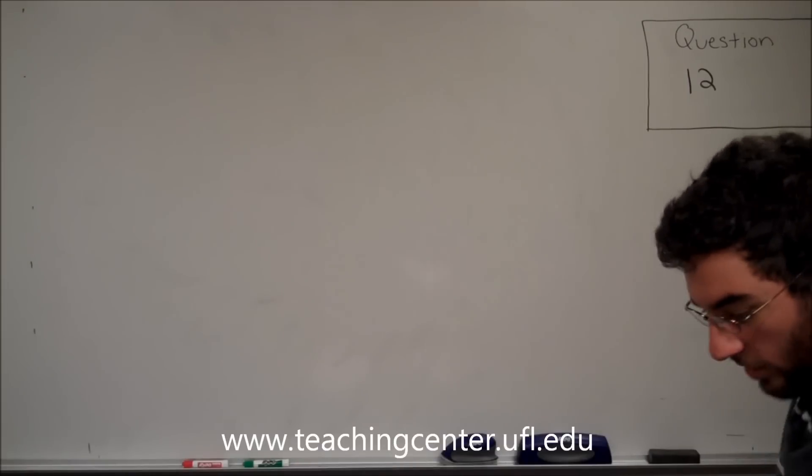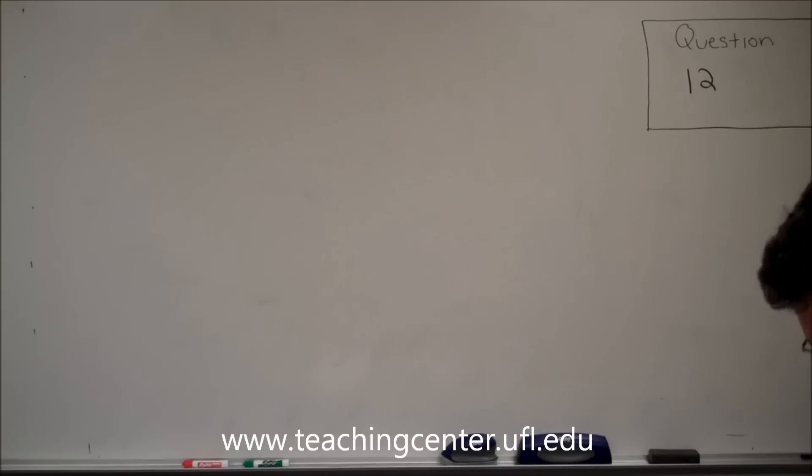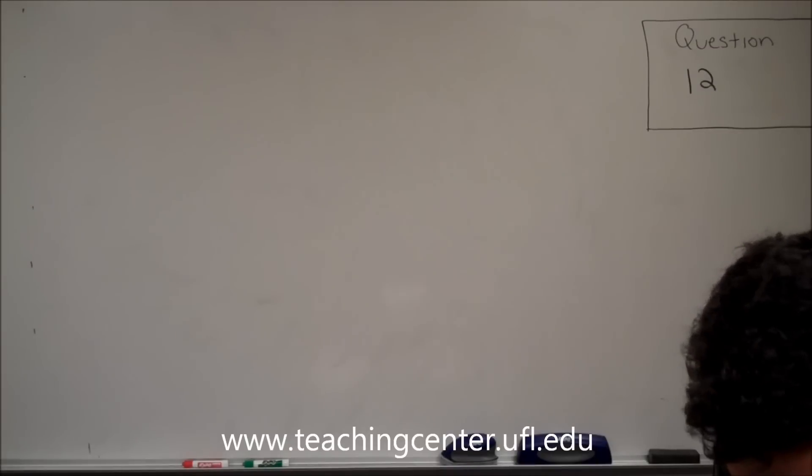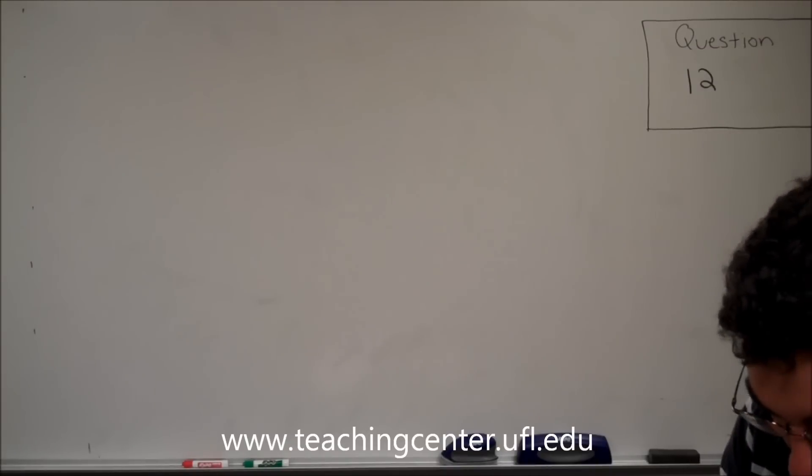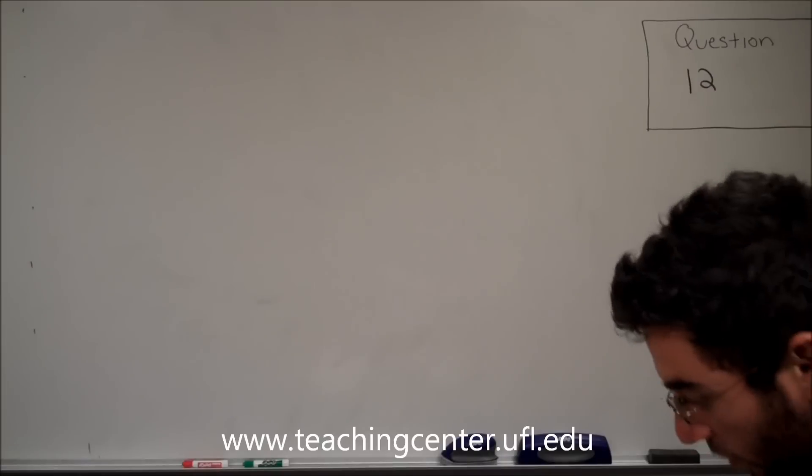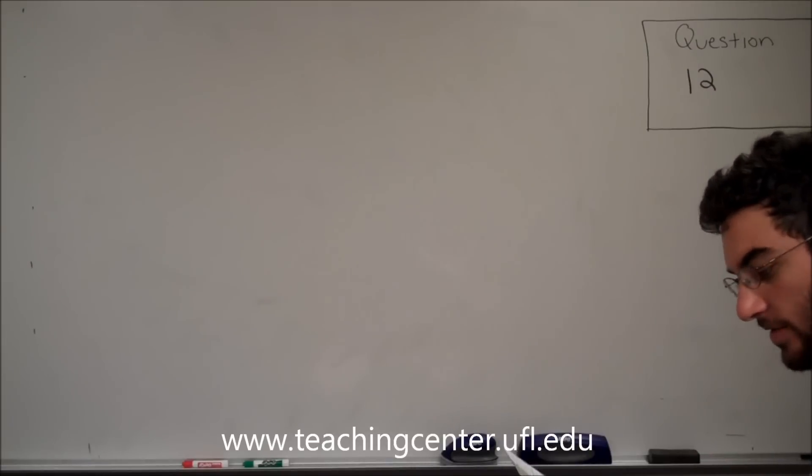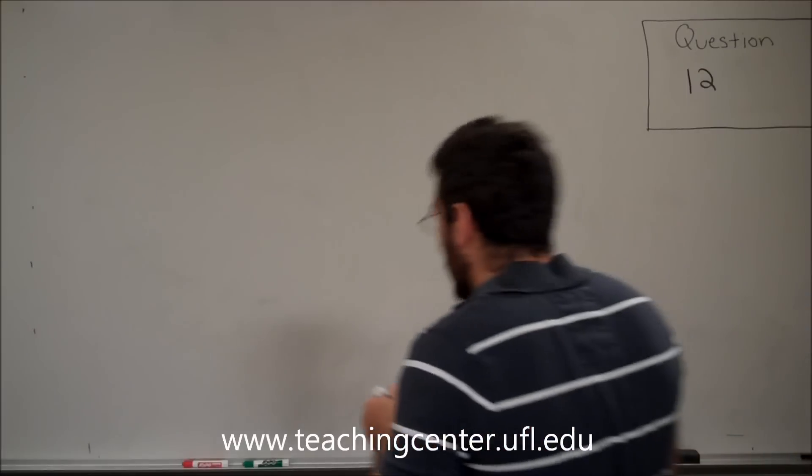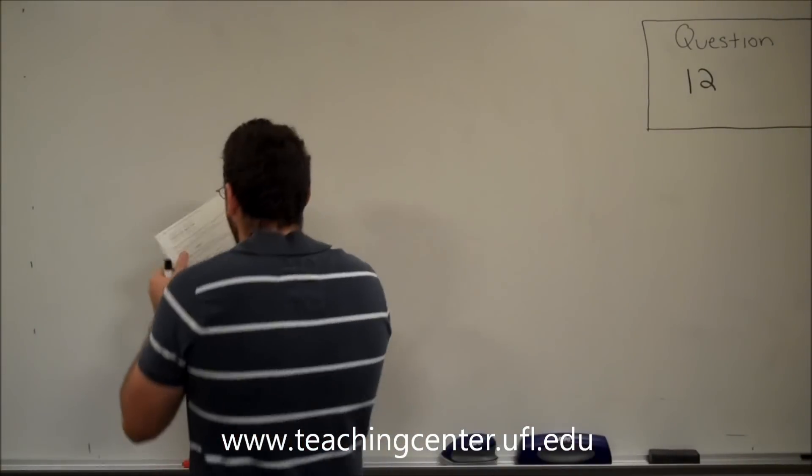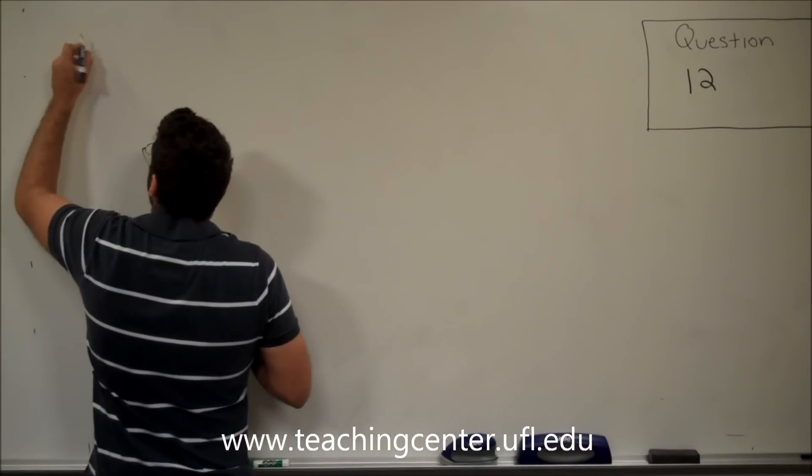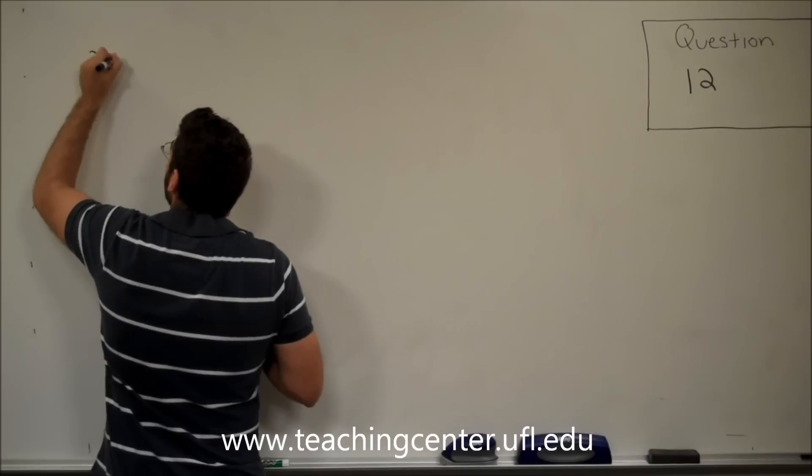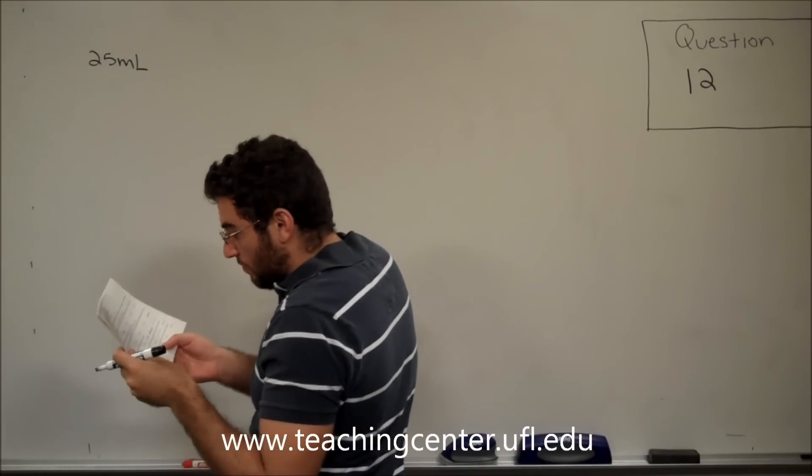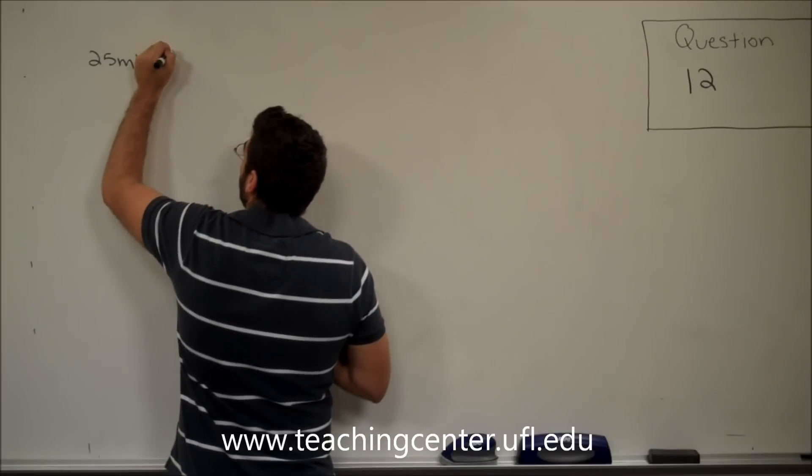Question number 12 wants us to use dilution to figure out how much volume or how many molar of a solution we have. So it says, to what volume should you dilute 25 milliliters of a 10.0 molar H2SO4, sulfuric acid,